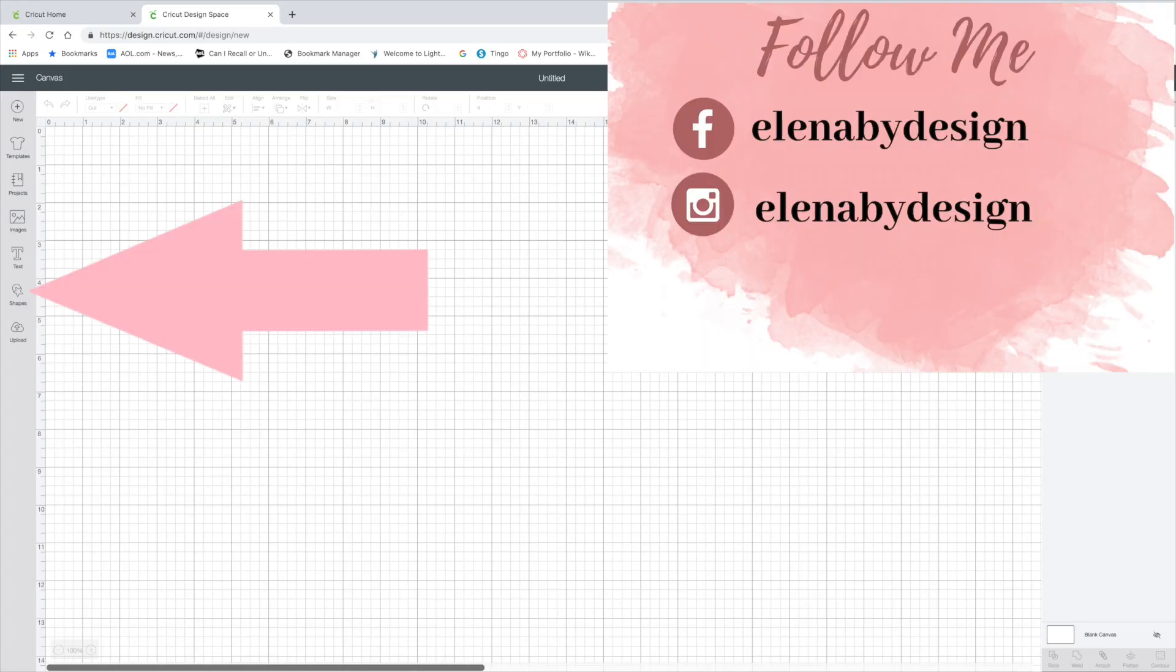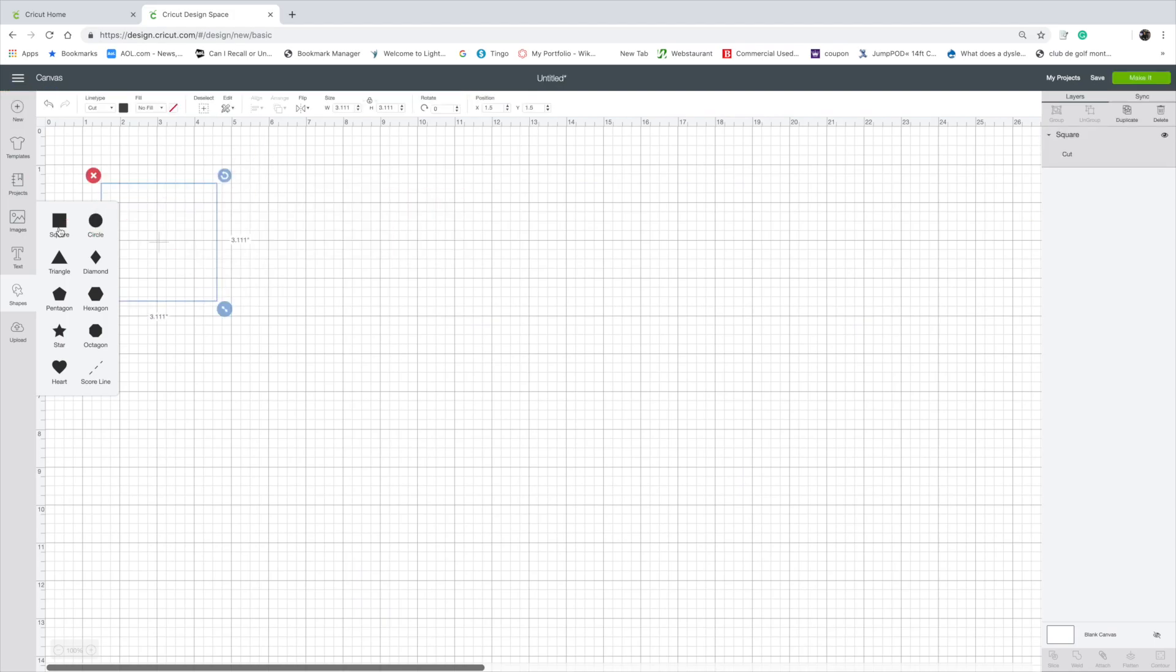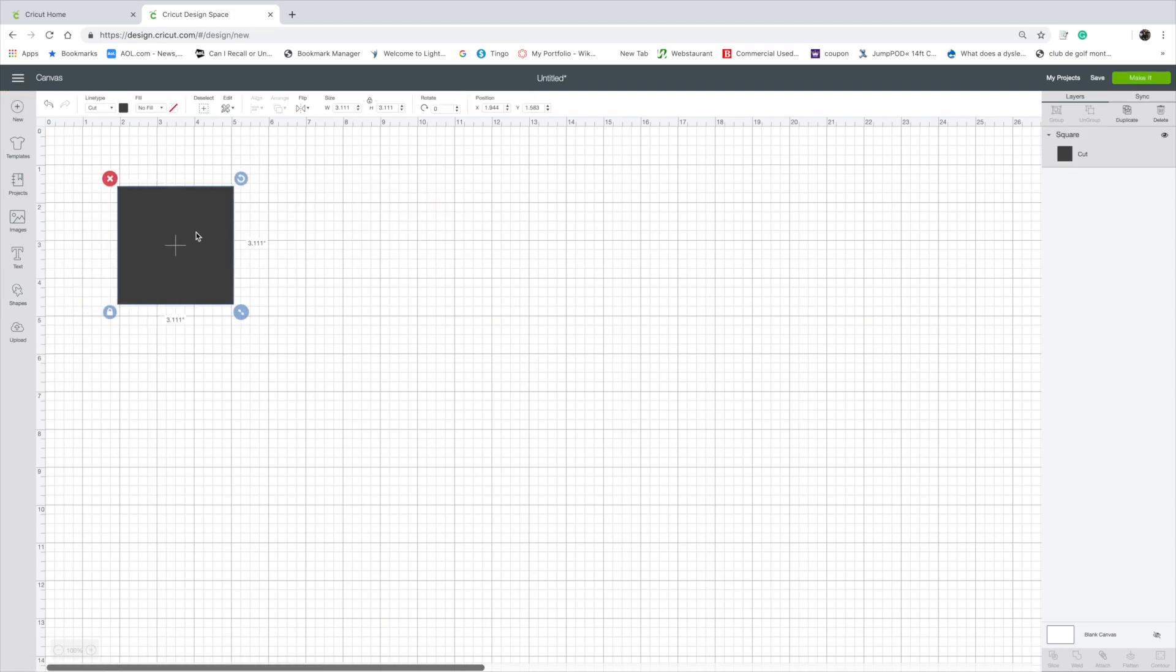Once you're on Design Space, select shapes, select square. This square will act as the tile to help you get an idea of how big you want your image to look like on the tile.